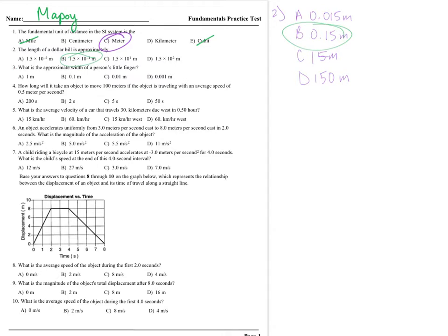Number three: what is the approximate width of a person's little finger, a.k.a. the pinky. Let's take a look at your own pinky and approximate that width. 1 meter is too big. 0.1 meter — that's about 10 centimeters — still too big. 0.01 meter is 1 centimeter. And 0.001 meter is 1 millimeter. The closest here would be that 1 centimeter value, choice C.